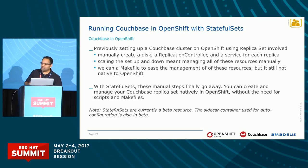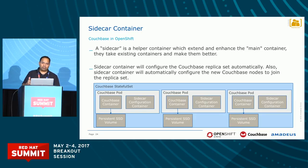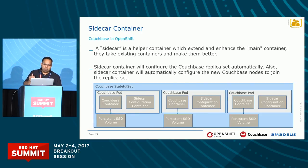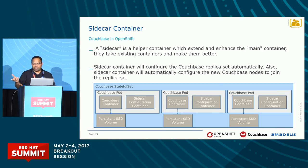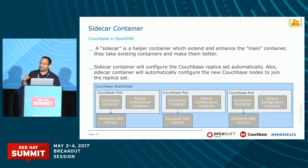The third design element is the sidecar container. A sidecar container is a helper container that enhances and extends your main container. In our project, the sidecar container's job is to configure the Couchbase container — it is the bridge between the OpenShift environment and Couchbase. All the communication happening between OpenShift and Couchbase is taken care of by the sidecar. For example, when a new pod gets provisioned, the sidecar makes a call to the Couchbase cluster and says 'there's a new pod and this instance has to be added to the cluster.' All that communication is handled by the sidecar.